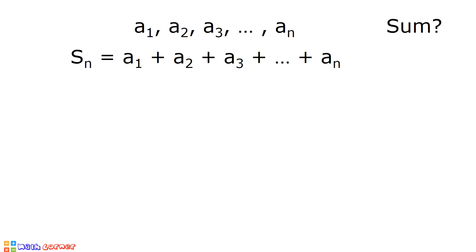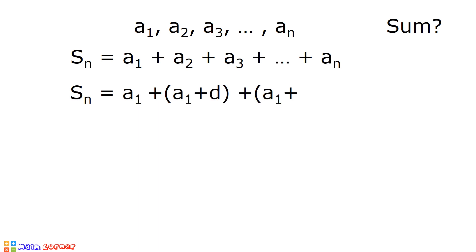We can expand our equation by writing S sub n is equal to a sub 1. The second term is a sub 1 plus the common difference. The third term is a sub 1 plus 2 times the common difference, all the way to the last term which is a sub n.